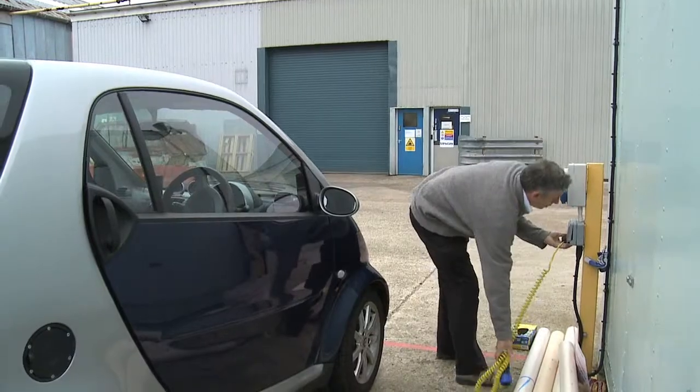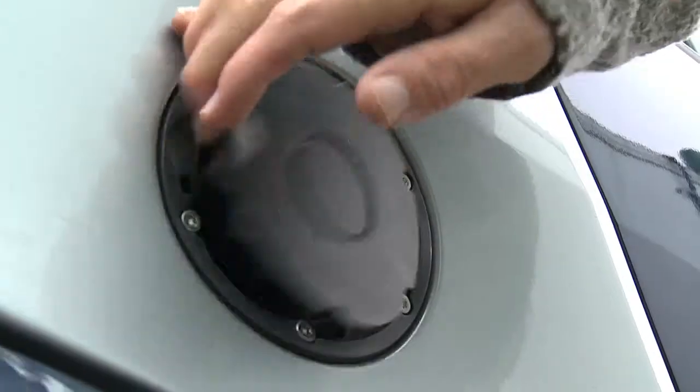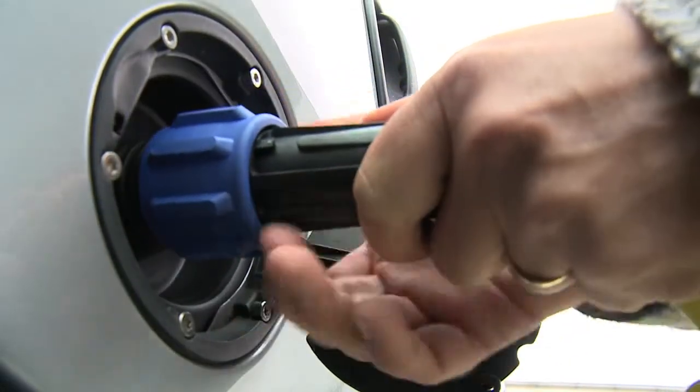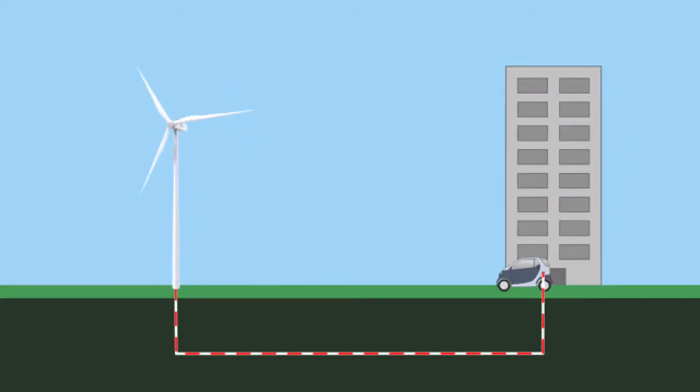The great thing is cars are only used for about 1 hour in 24. So 23 hours of the day it's sat there able to be charged, and as long as we have enough charging points at school, at work, at your home, the intelligent grid can choose when to charge your car.